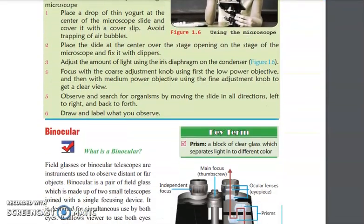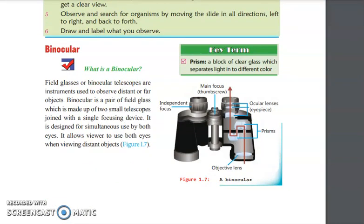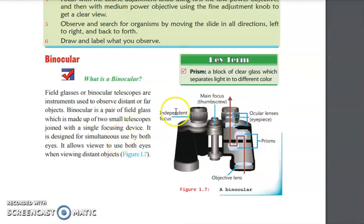Now let's look at the second technological product, which is a binocular. Binocular is a device that helps us to observe distant objects. It contains two small telescopes joined by a single focusing device or thumb screw.